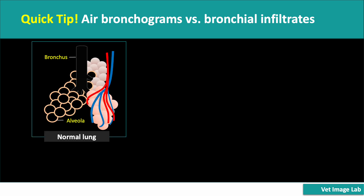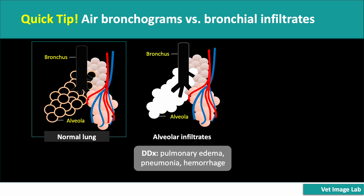Let me explain using these illustrations. In a normal lung illustration, both the bronchi and alveoli are filled with air, which makes them appear dark. As a result, they are not easily distinguishable from one another. This is why, on a normal chest X-ray, these structures blend into the surrounding lung field, making them difficult to separate. When alveolar infiltrates develop, the alveoli become more opaque, making the lung appear brighter on X-rays. However, the bronchi remain filled with air, so they still appear dark against this bright background. This contrast creates a characteristic branching pattern known as an air bronchogram.